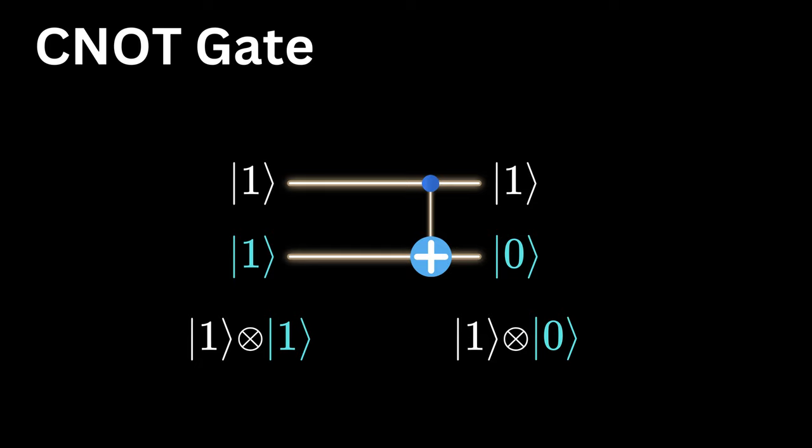For instance, if you have a two qubit system, where the first qubit is in the state 1, and the second one is in the state 1, we denote this as 1 tensor 1. But don't let the tensor product intimidate you, as it can be simplified.